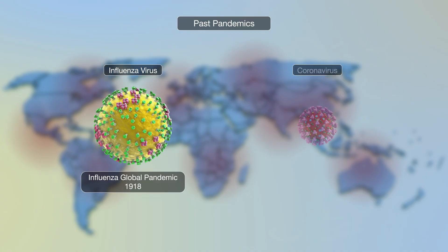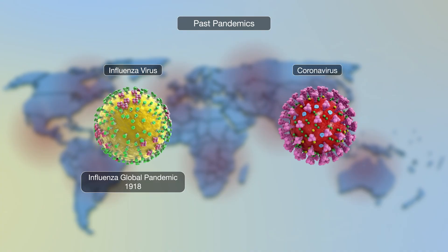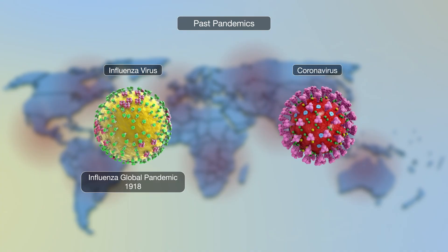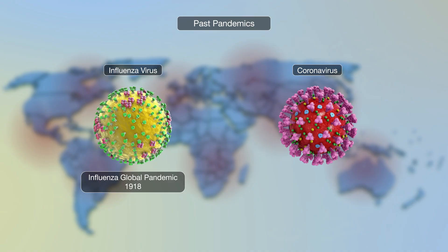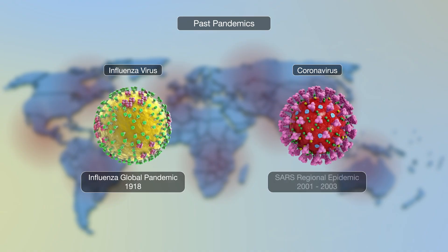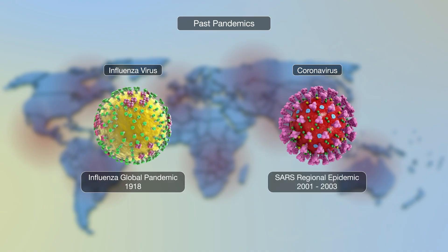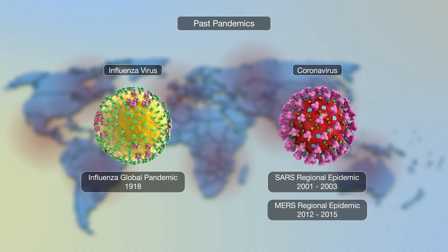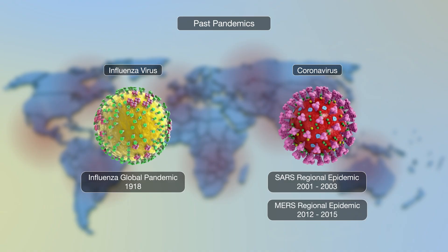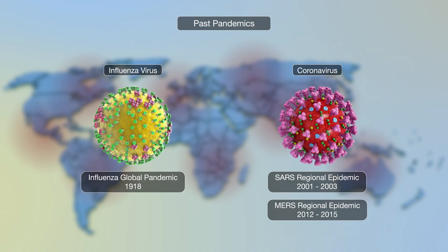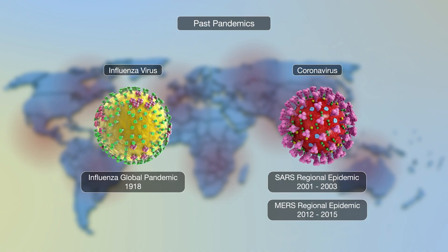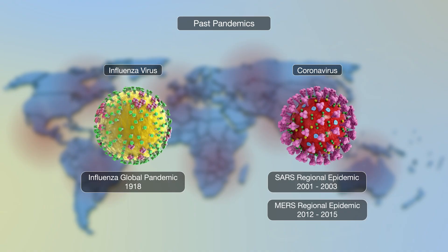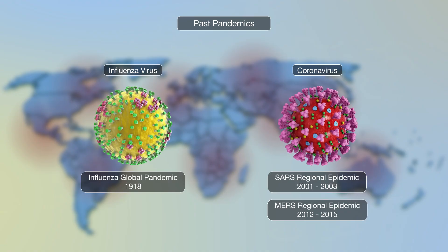While no global pandemic has been born from the family of coronavirus, two regional epidemics have resulted from this family of viruses. They include severe acute respiratory syndrome, or SARS, and Middle East respiratory syndrome, or MERS, in 2001 to 2003 and 2012 to 2015, respectively, and resulted in over 1,500 deaths.